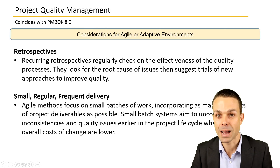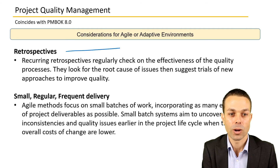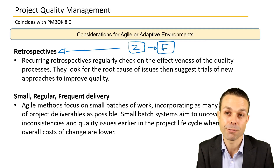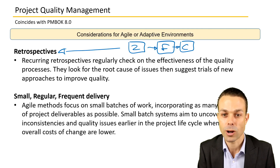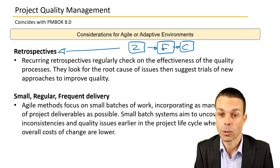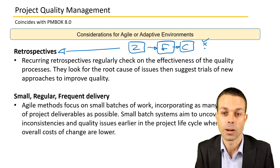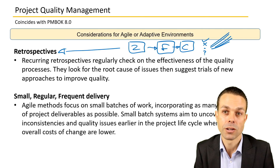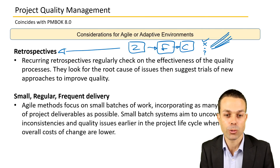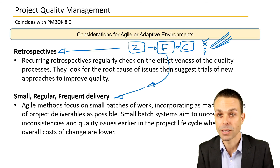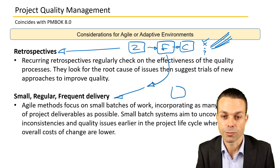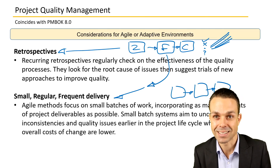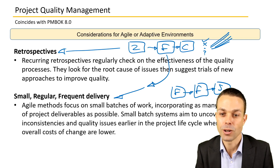Considerations for an agile or adaptive environment include retrospectives: at the end of an iteration — say two weeks — after delivering a feature the customer can see, feel, and touch, the team asks what went well, what didn't go well, what have I learned, and what still puzzles me. This allows the team to improve processes over time. Small, regular, and frequent delivery means delivering multiple features on a shorter time scale, getting a good idea of how the project is tracking and whether it meets the customer's needs at each feature milestone, not just at the end.